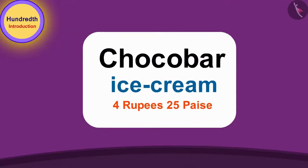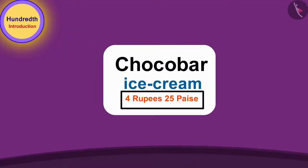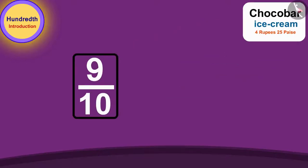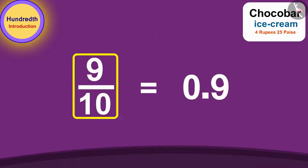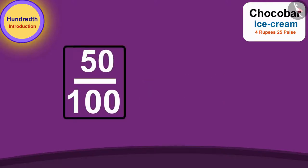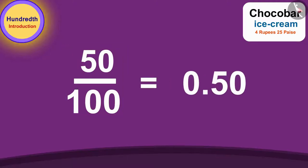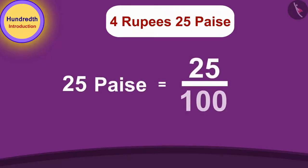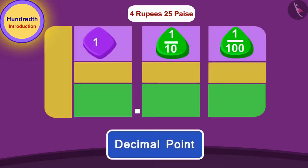Chocobar ice cream costs four rupees and twenty five paise. Just as we write one tenth of any number using a decimal point, in the same way we can write one hundredth of any number using a decimal point. Here, twenty five paise is twenty five hundredth parts of a rupee.